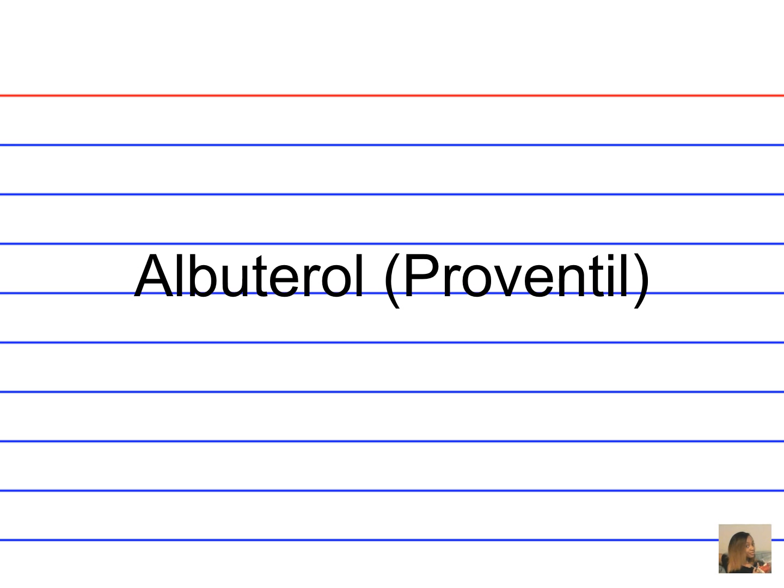What is the drug classification for albuterol? Albuterol is a beta-2 agonist. What is the indication for administering albuterol to a patient? For asthma. What are other agents that can be used instead of albuterol? Terbutaline (Brethine), whose indication is to reduce contractions in preterm labor. What is the mechanism of action for albuterol? It activates beta-2 receptors.